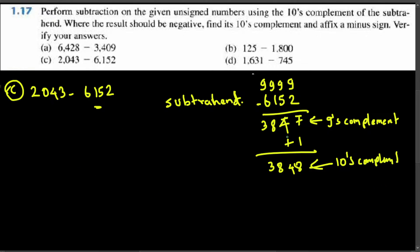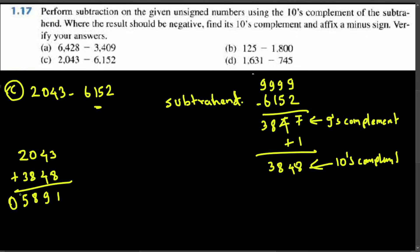Now add the tens complement with the minuend: 2043 plus 3848. We get: 3 plus 8 is 11 — write 1 carry 1, 4 plus 4 plus 1 is 9, 0 plus 8 is 8, 2 plus 3 is 5. So the result is 5891, and there is no extra carry in front of it — this 0 means we have to do the tens complement to find the real answer. If you have no extra carry, that's a minus.